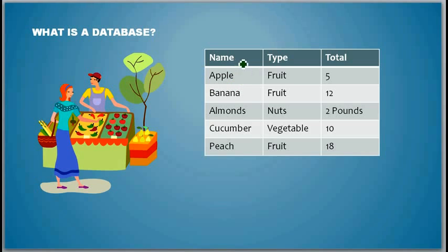For example, probably it would be something like this: name, and then what type, and then how much do they have. Probably apple is a fruit and starts with five, and then banana fruit starts with twelve, and then almond comes under the nuts category and they have, let's say, two pounds, and then they have cucumber.